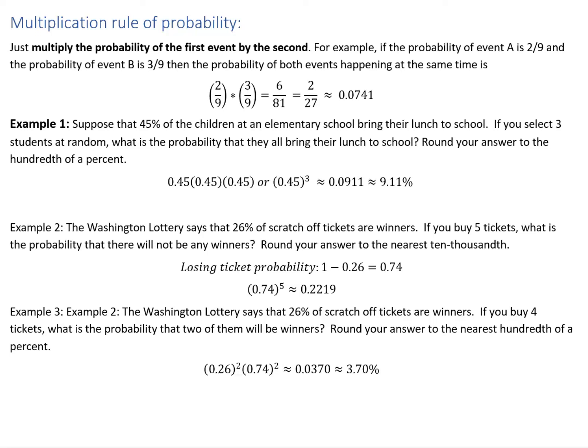For example, the probability of event A is 2/9ths and event B is 3/9ths, then the probability of both events happening at the same time is 2/9ths times 3/9ths, and then you might be asked to write that as a fraction in lowest terms or as a decimal.